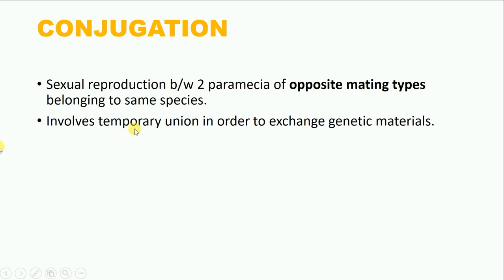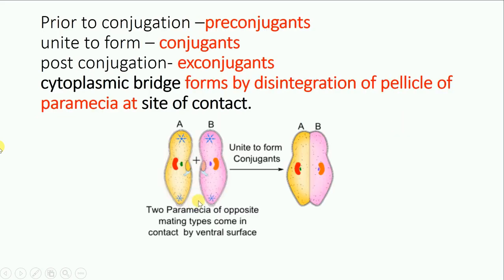During conjugation, there is a temporary union of the two individuals in order to exchange their genetic materials. Here are two paramecia — we can see they are of the paramecium caudatum species because each has one macronucleus and one micronucleus. These two paramecia will come in contact by their ventral surfaces and unite to form the conjugants. Before conjugation they are known as pre-conjugants, and after uniting they form the conjugants. At the site of their contact, the pellicle — the outermost limiting layer — disintegrates so that the cytoplasm of the two conjugants fuses to form the cytoplasmic bridge.